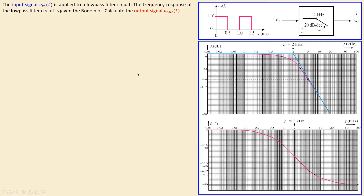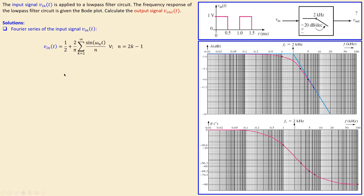We start by using the Fourier series representation for our input voltage. The Fourier series of the input signal is determined using the table of Fourier series. The result is an expression for Vin with a DC value of 0.5 and AC values given by an expression where n equals 2k minus 1. The integer k starts at 1 and goes to 2, 3, and so on to infinity, giving us the AC terms and the DC term.